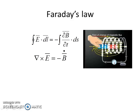The next equation is Faraday's law. Faraday's law tells us that a magnetic field that is changing in time will give rise to a circulating electric field. This means we have two ways of generating electric fields: from electric charges, and from a magnetic field that is changing.